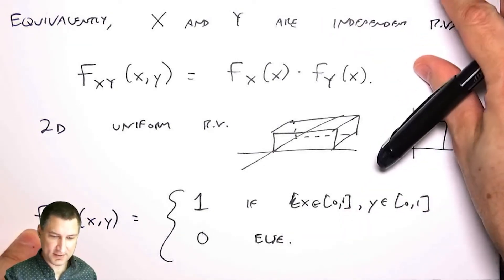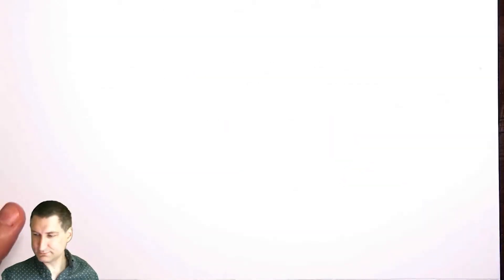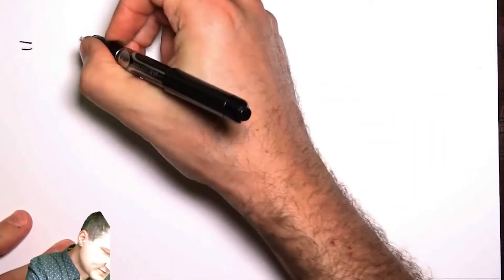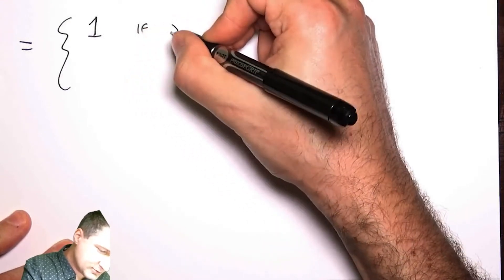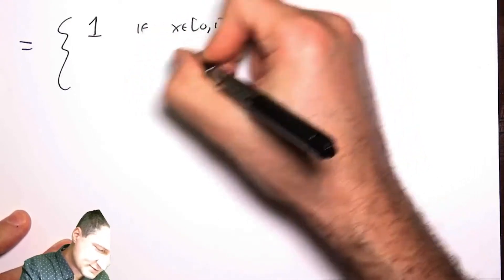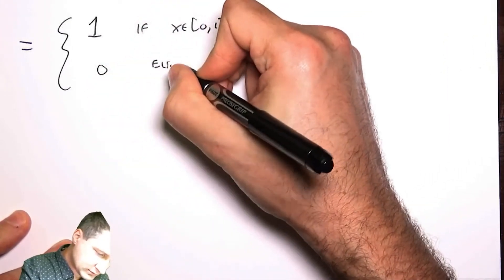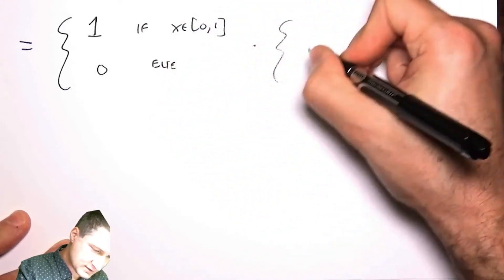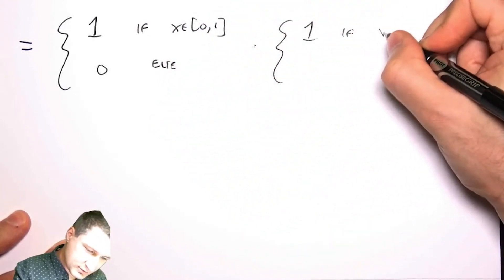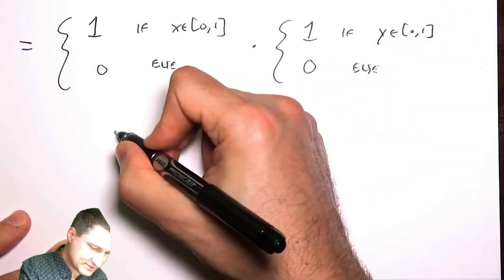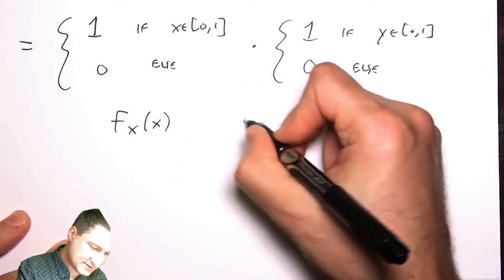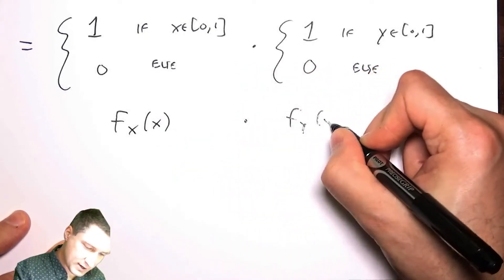this is the same as a uniform random variable in X times a uniform random variable in Y. This is like the part of X and this is the part of Y.